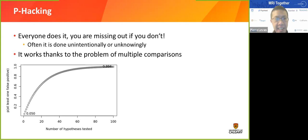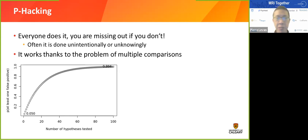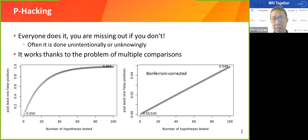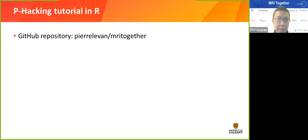The basics of p-hacking is this idea of multiple comparisons. If you do a lot of statistical tests, you increase your chance of finding a false positive. Even though you might test one hypothesis at a level of 0.05 — a 5% chance of a false positive — if you start testing 100 hypotheses, you actually have a 90% chance of finding a false positive along the way. The correction is to test at 0.05 divided by 100, giving you a desired significance level of 0.05 overall.